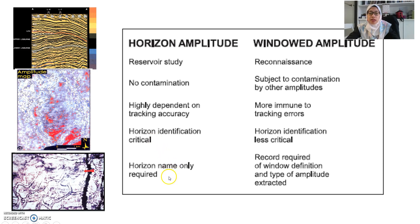For window amplitude it's a good idea to study the whole seismic data in a quick view. It's usually for reconnaissance. It is always subject to contamination by other amplitude because you are taking some range of data set to study the amplitude. But sometimes you can straight away do this analysis of window amplitude without any horizons. Because sometimes you just need two different time levels.